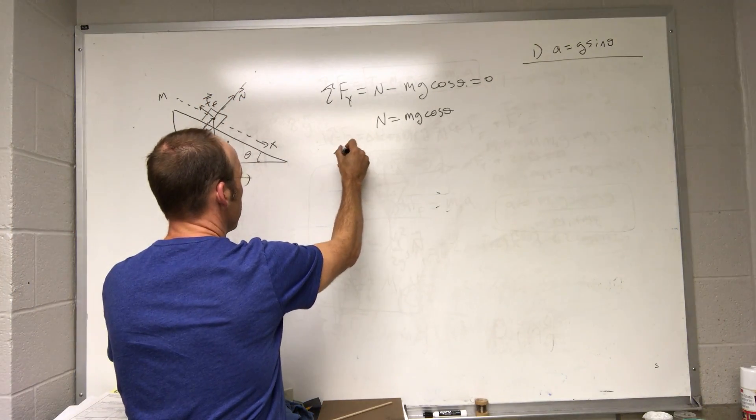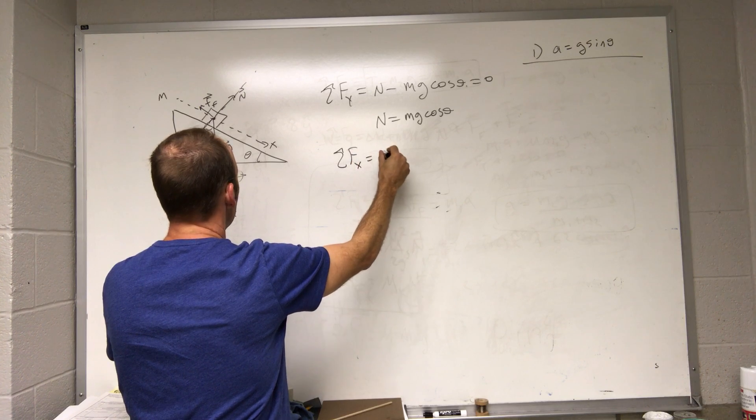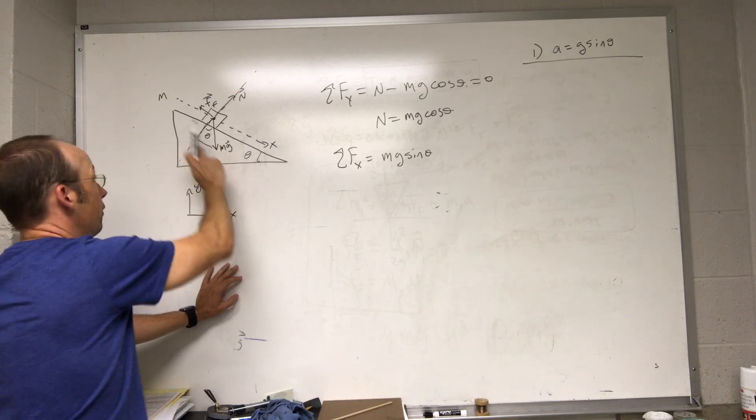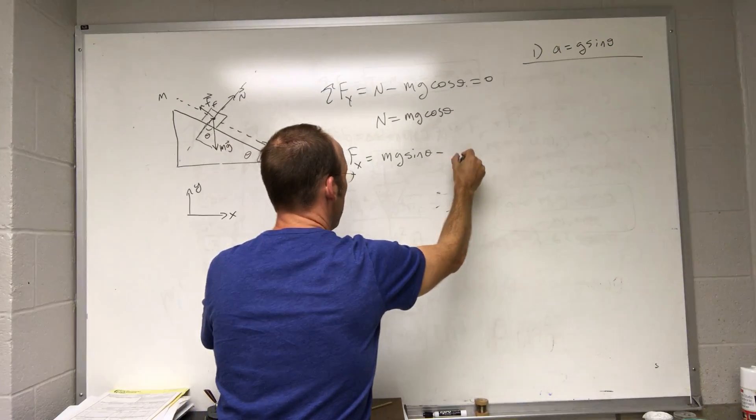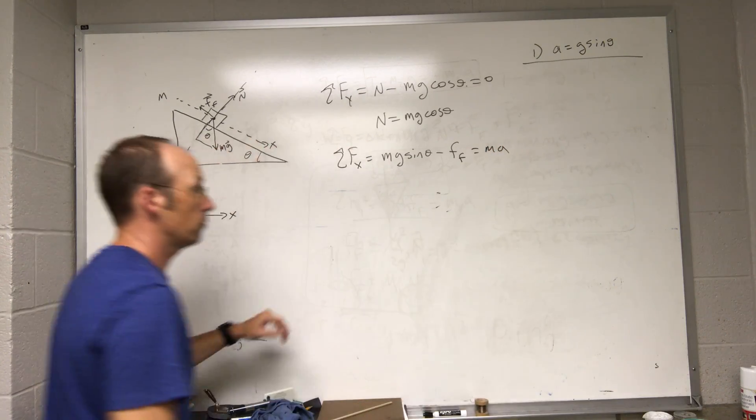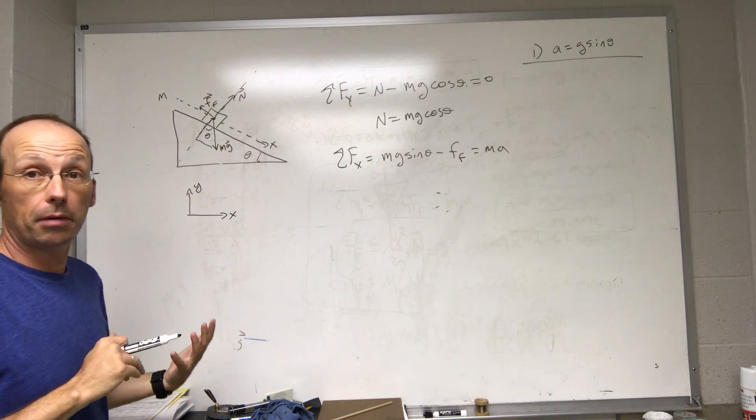But now my x looks like this. I have mg sine theta, that's my x component of the gravitational force, minus the frictional force, equals ma. And now I can use my model for friction.